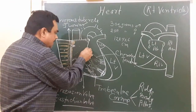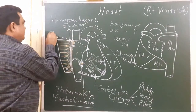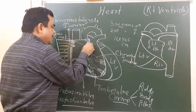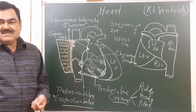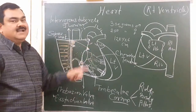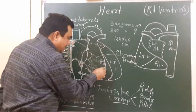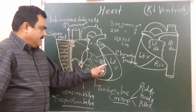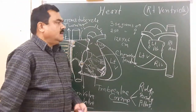Here is a crest known as the supraventricular crest. Above this there is a smooth part where the pulmonary valve is present. This smooth part develops from the bulbus cordis. Another important structure here is the moderator band, which connects the septal wall with the anterior papillary muscle. So this is an overview of the right ventricle.